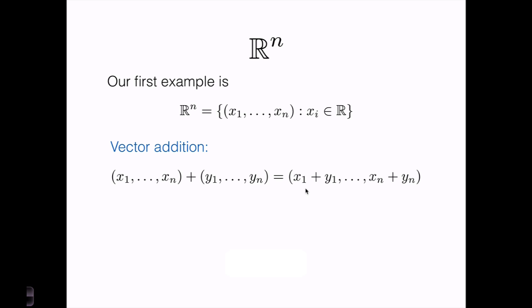We defined addition of two vectors coordinate-wise. In other words, if we have two vectors x and y, the first coordinate of their sum is simply the sum of the first coordinates of x and y. The second coordinate of the sum would be x2 plus y2, and so on. So the nth coordinate of the sum x plus y is xn plus yn.